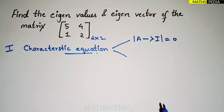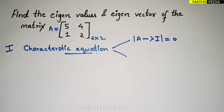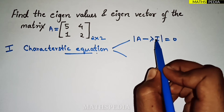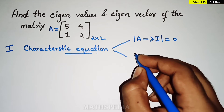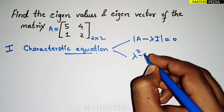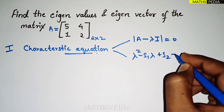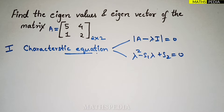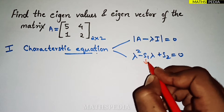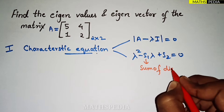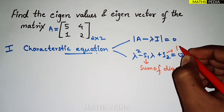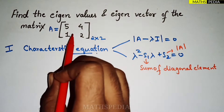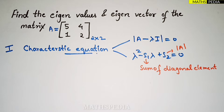In this method, A is whatever matrix is given in the question. λI: here I is the identity matrix, which for a 2×2 matrix is the 2×2 identity matrix. The second method uses the formula: λ² minus S1·λ plus S2 equals zero. Here S1 is the sum of diagonal elements and S2 is the determinant of the matrix.